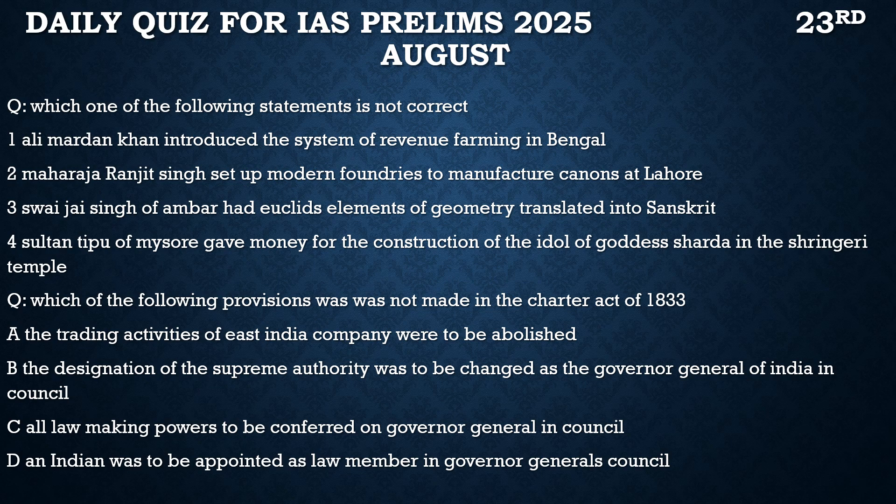Previous Year Question 2: Which of the following provisions was NOT made in the Charter Act of 1833? Option A — trading activities of the East India Company were to be abolished — correct provision. Option B — the designation of the supreme authority was to be changed as Governor-General of India in Council — correct. Option C — all law-making powers to be conferred on the Governor-General in Council — correct. Option D — an Indian was to be appointed as law member in the Governor-General's council — this was NOT a provision. Correct answer: option D.